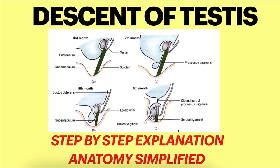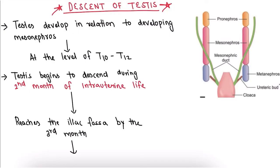Hello friends, my name is Mohammad Amran, I'm a second MB-based student. In this video we will talk about the descent of testes, which is a very important topic for anatomy exam. The testes develops in relation to the developing mesonephros — a primitive kidney-like structure that develops during the development of the kidney.